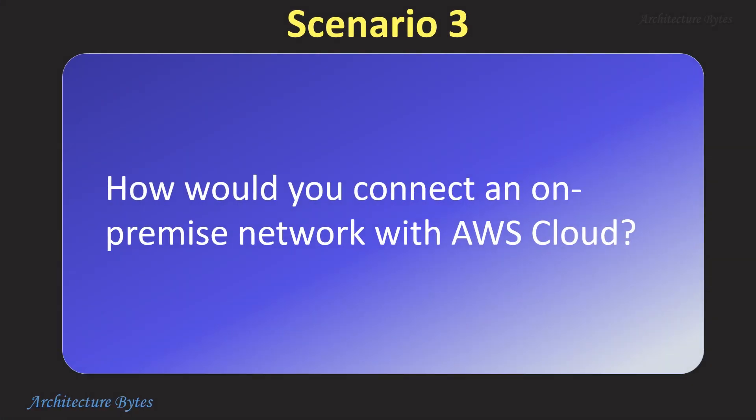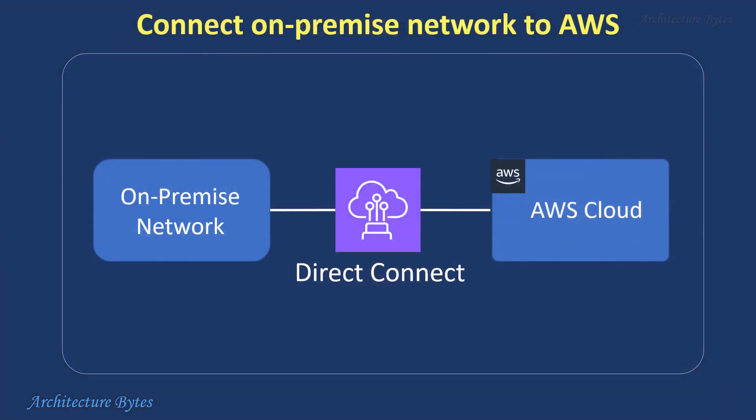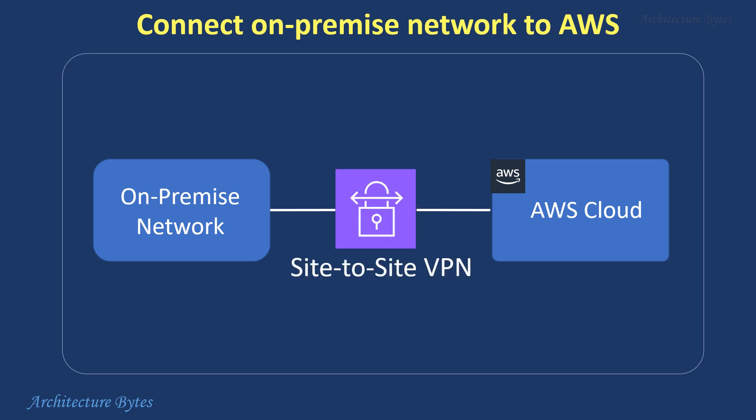How would you connect an on-premise network with AWS cloud? AWS Direct Connect lets you establish a dedicated high-bandwidth network connection between your on-premise network and AWS, bypassing the public internet. Site-to-site VPN creates a secure encrypted tunnel using IPSec to connect your on-premise network to your VPC in AWS, allowing controlled private communication between your resources over a secure tunnel.